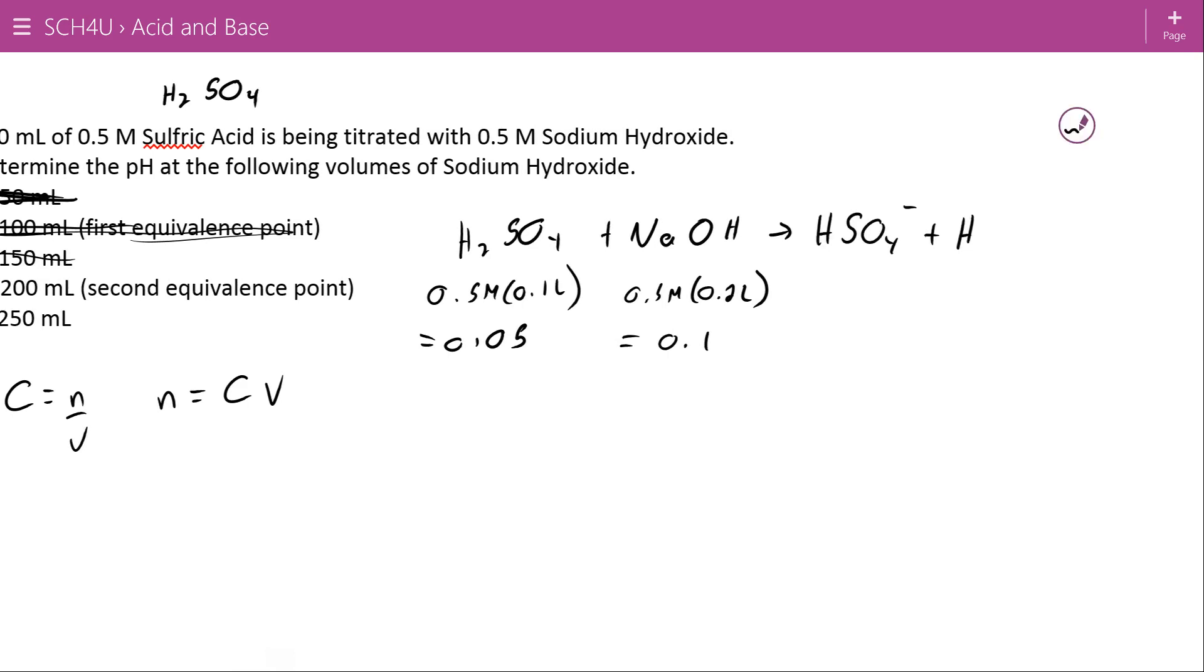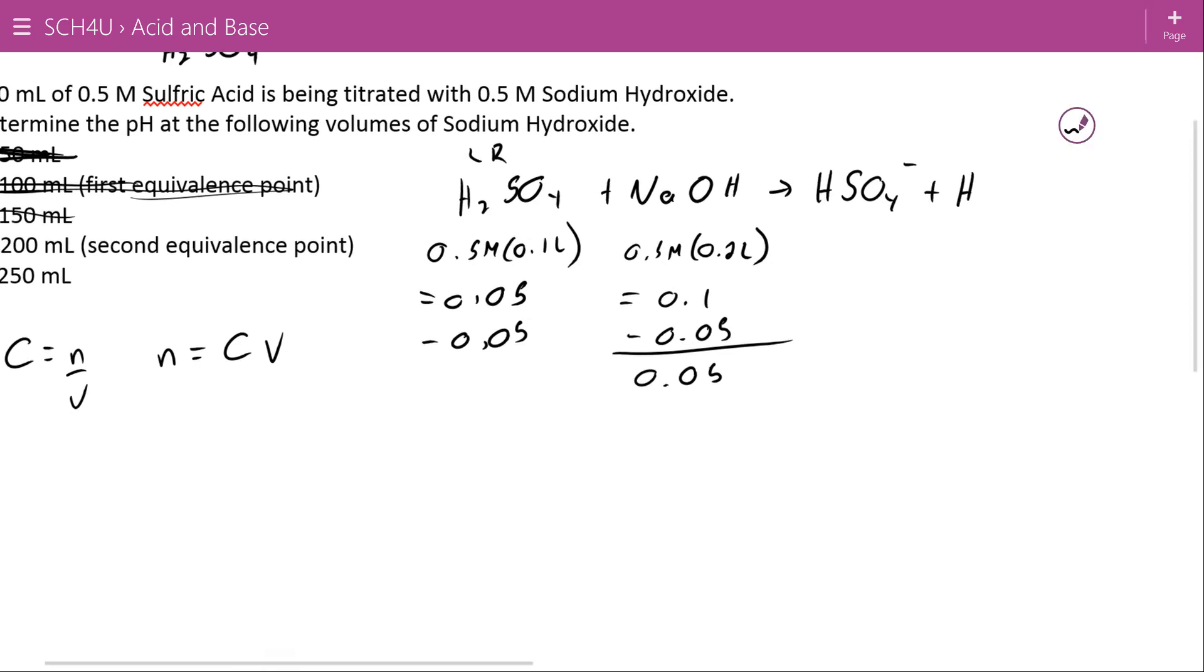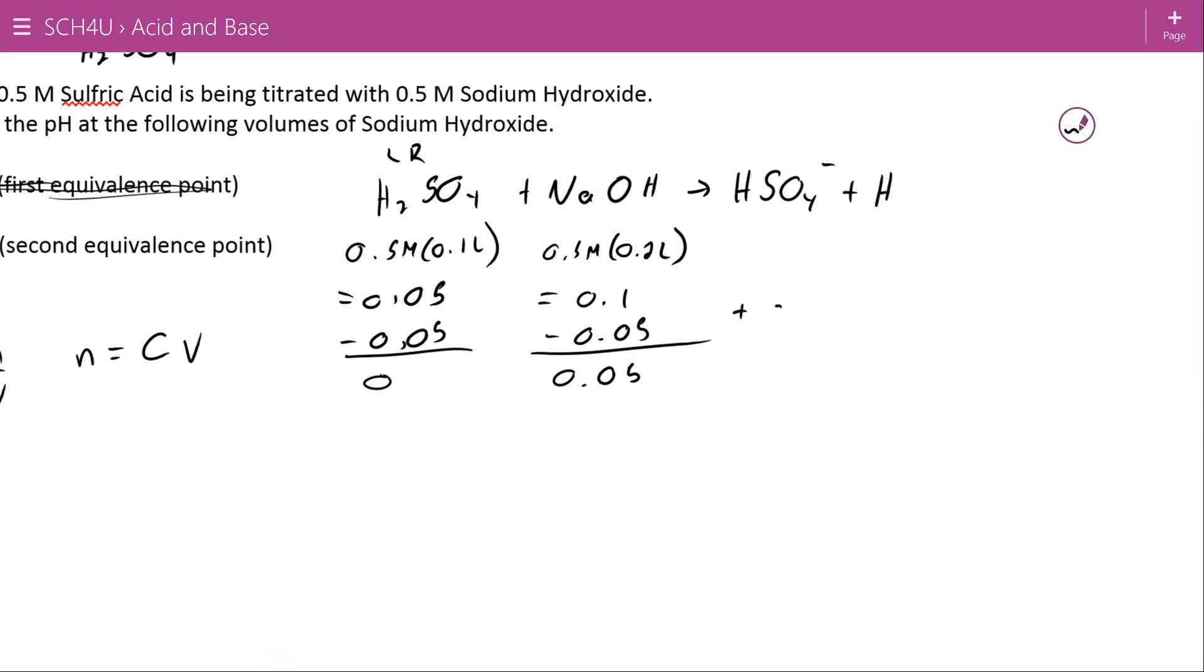Quantitative acid-base reaction meaning that all 0.05 moles of this, my limiting reagent, will be used up. And I will have 0.05 moles of my NaOH left over. And I will create on the way 0.05 moles of my HSO4 minus from nothing. So I have 0.05 of that total.